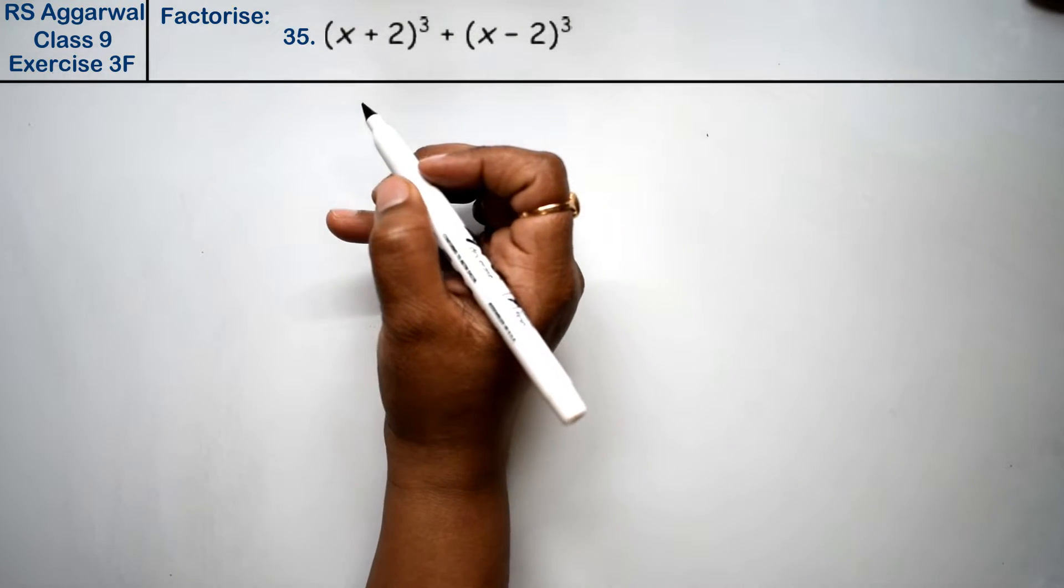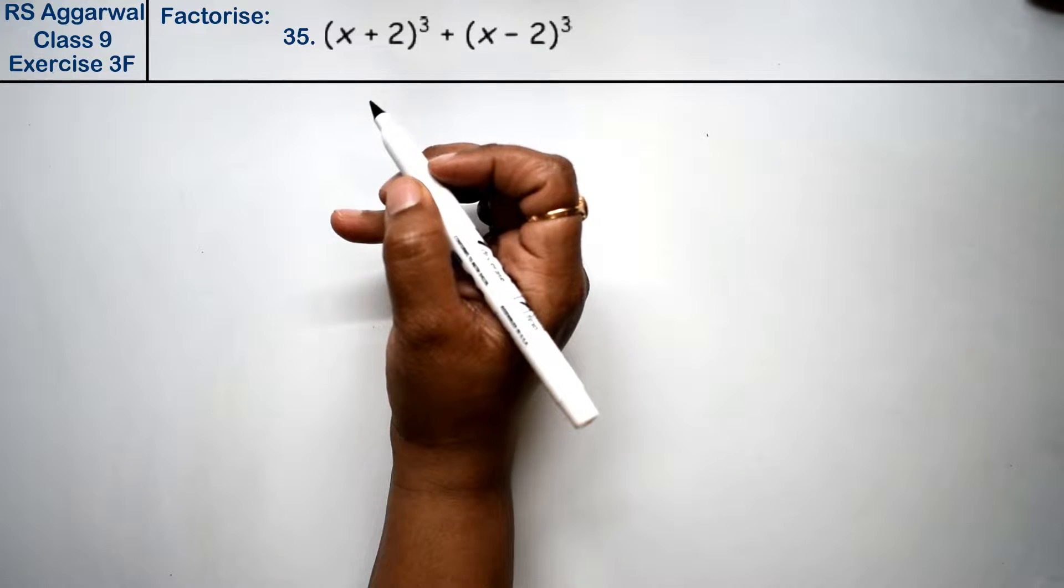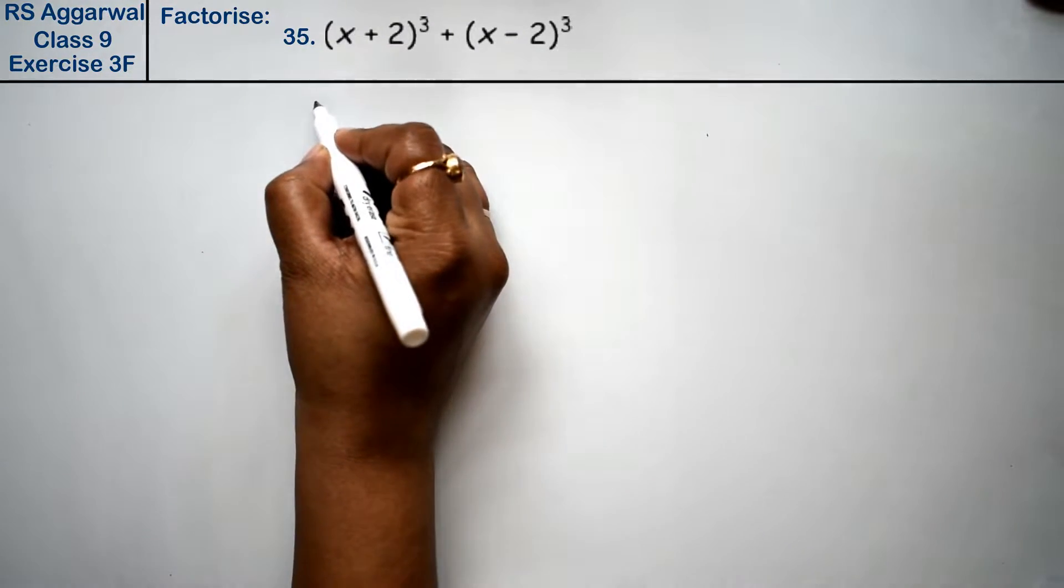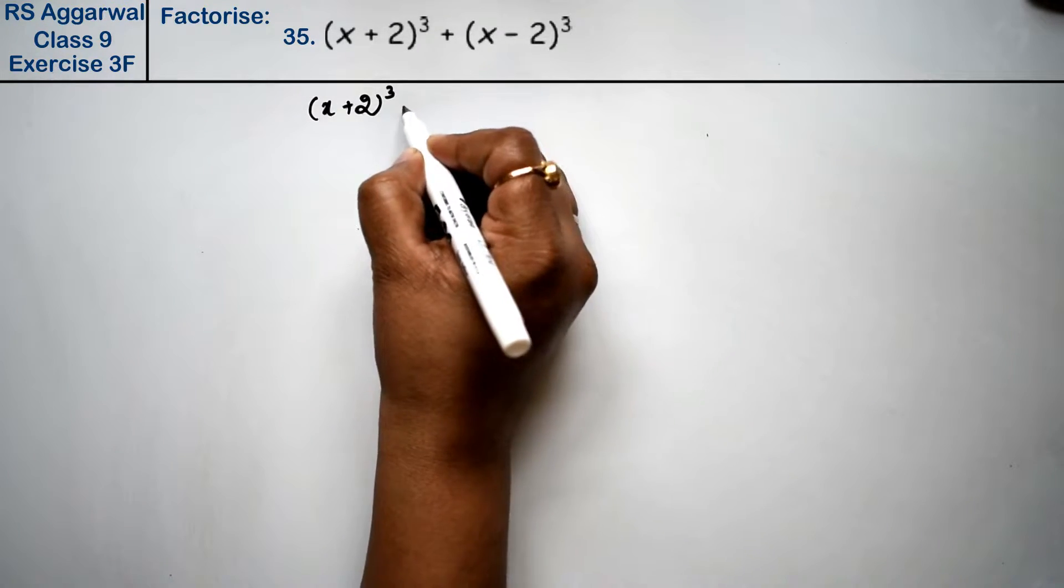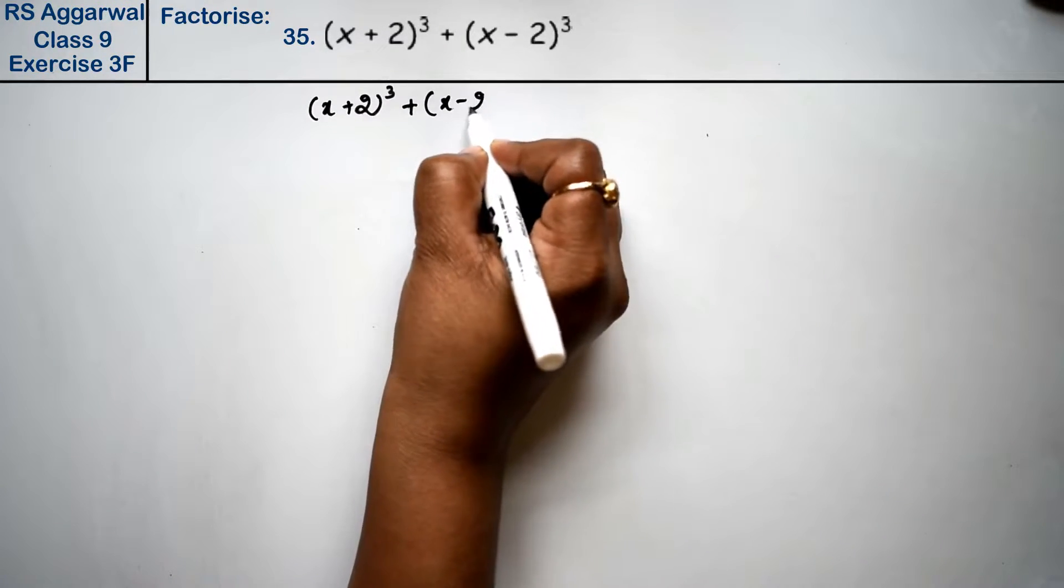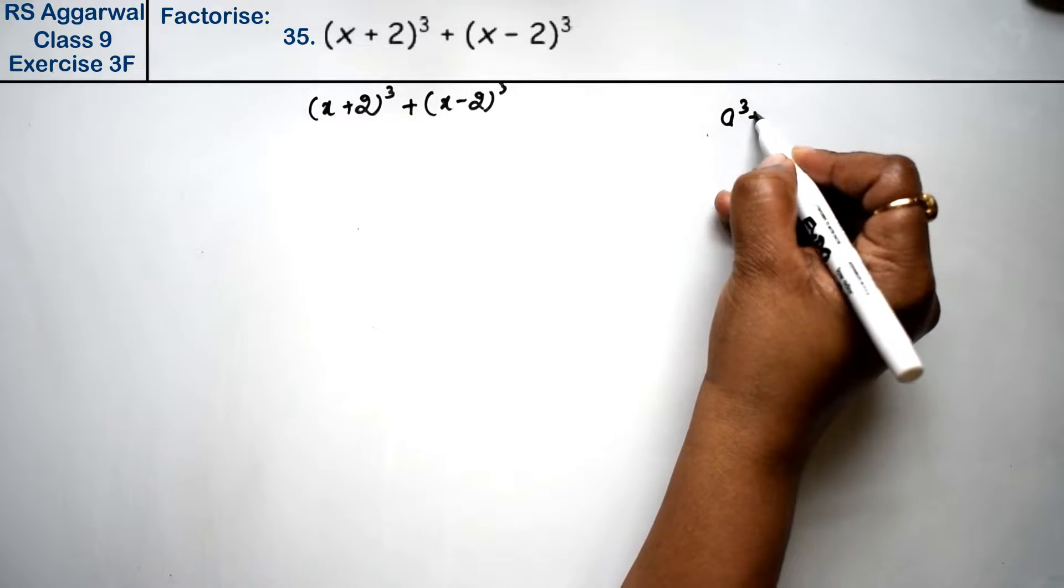Let's do question number 35 of Exercise 3F on factorization. Question number 35 is (x+2)³ + (x-2)³. This is in the form a³ + b³.